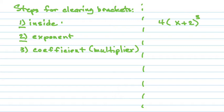We need to build that terminology library. If I say a constant, you know I mean a number. If I say a variable, you know I mean a letter. So can you add an x and a 2? No, because you can't combine variables and constants. Then the second thing: is there an exponent? Yes, the little 3 above the bracket — that's an exponent on the bracket itself, which we won't tackle in this course.